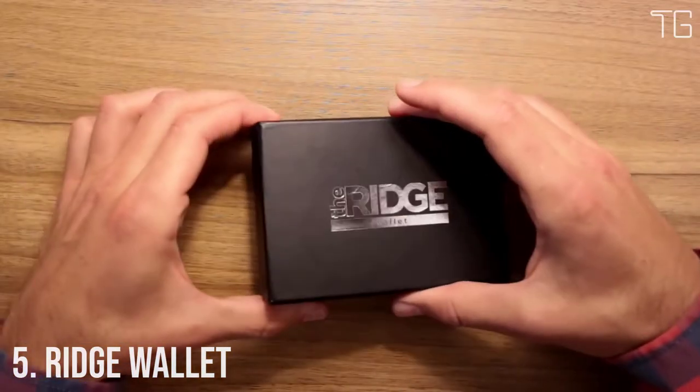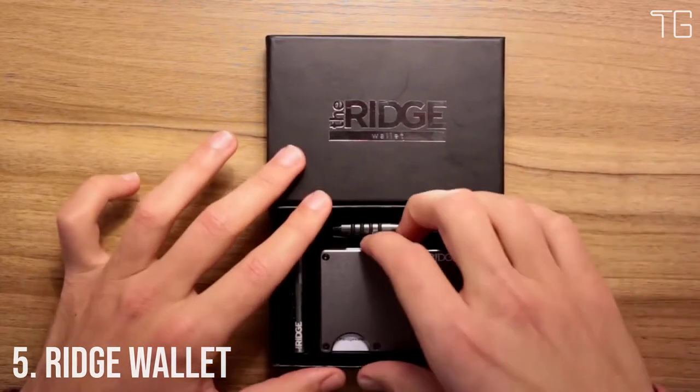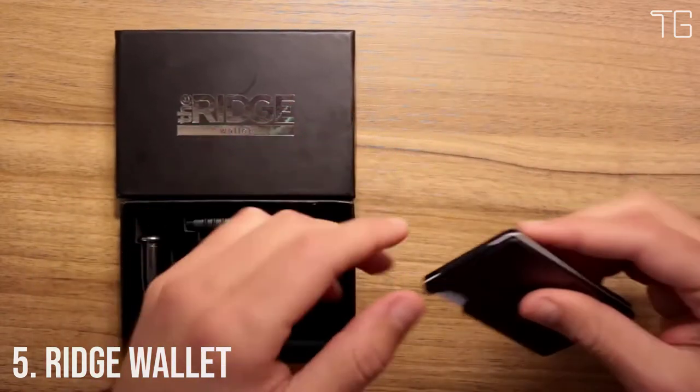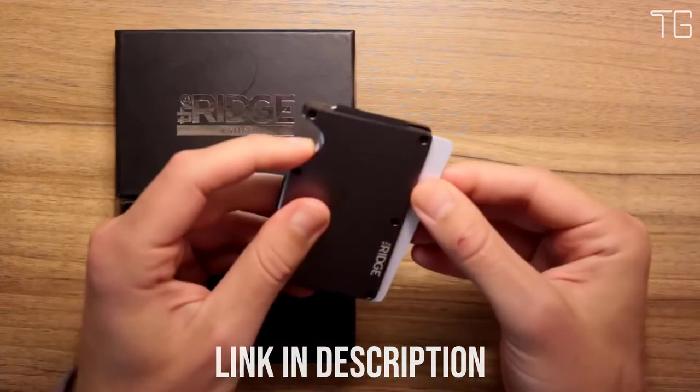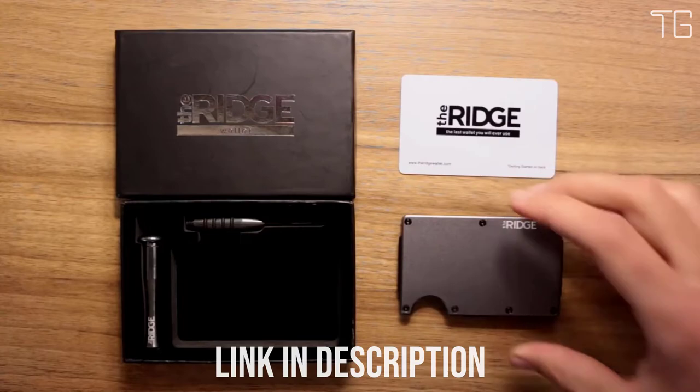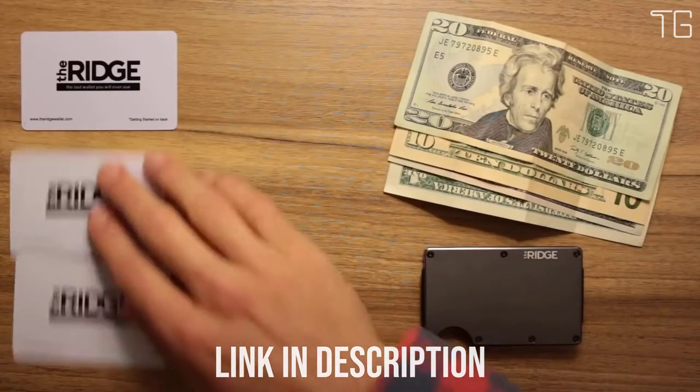Number 5. Ridge Wallet. The Ridge is a minimalist, RFID-blocking wallet and better way to carry cash and cards. Slim, RFID-blocking wallets that are guaranteed for life. The main cardholder uses elastic to expand to hold up to 12 IDs and credit cards.